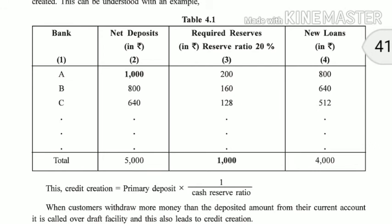When customers withdraw more money than the deposited amount from a current account, it is called the overdraft facility, and this also contributes to credit creation. For example, if my account has Rs. 1000 but I need Rs. 1500, the bank gives me the excess Rs. 500 for a shorter period of time — that is the overdraft facility of Rs. 500 provided by the bank.